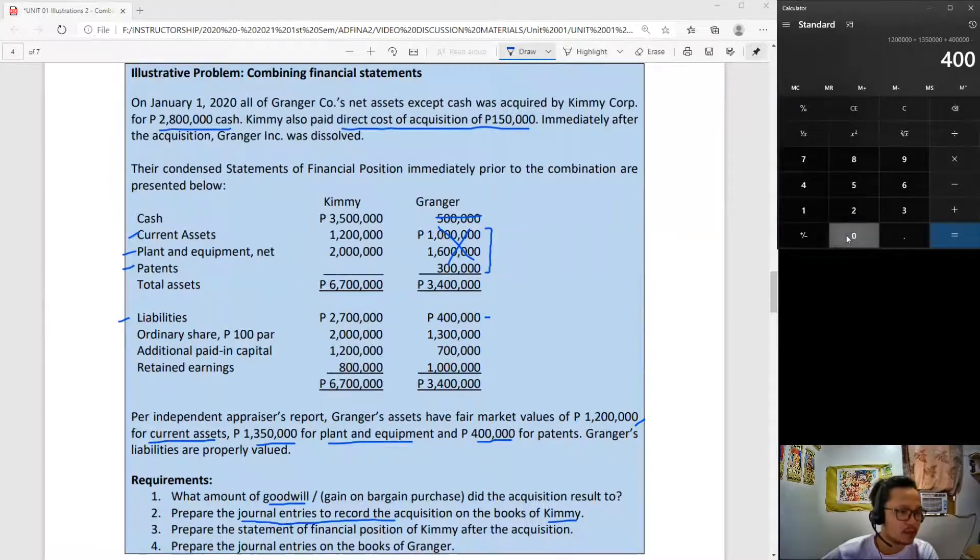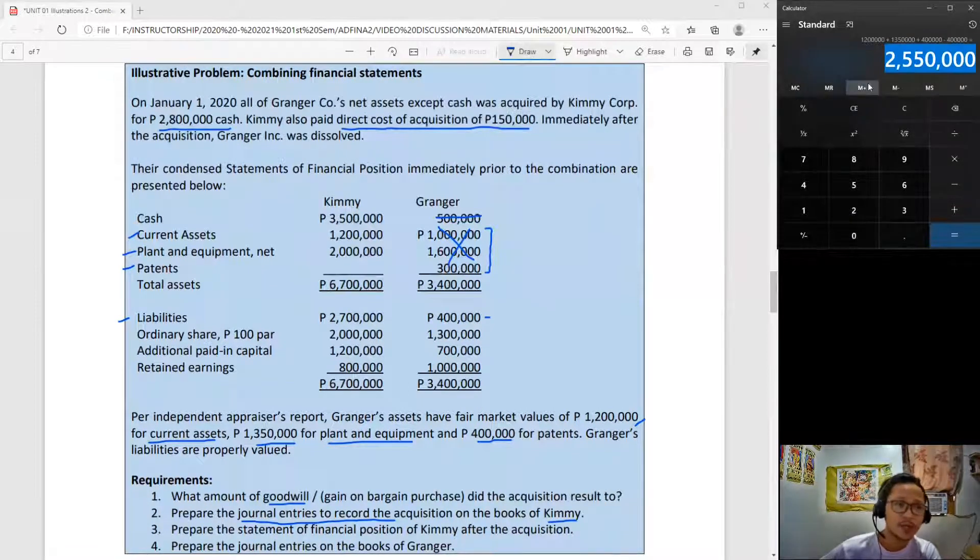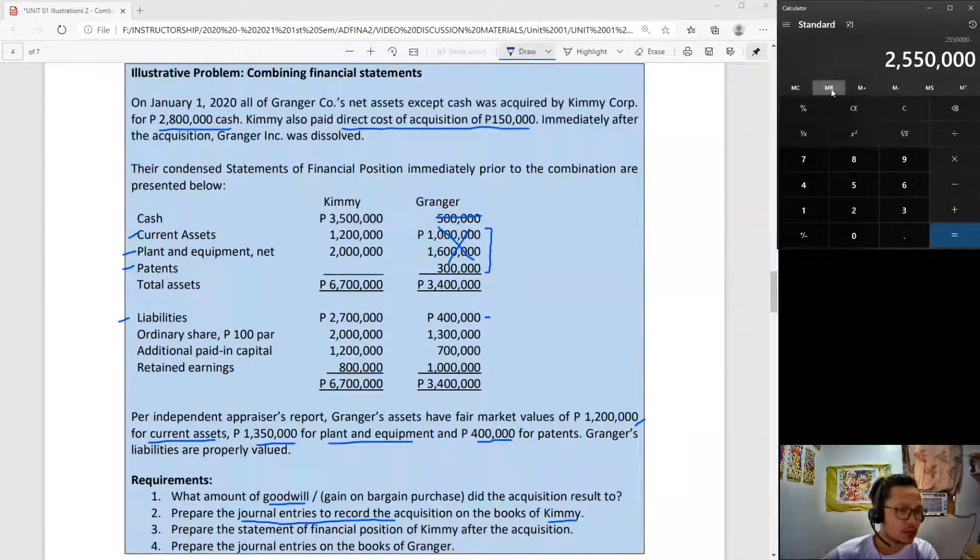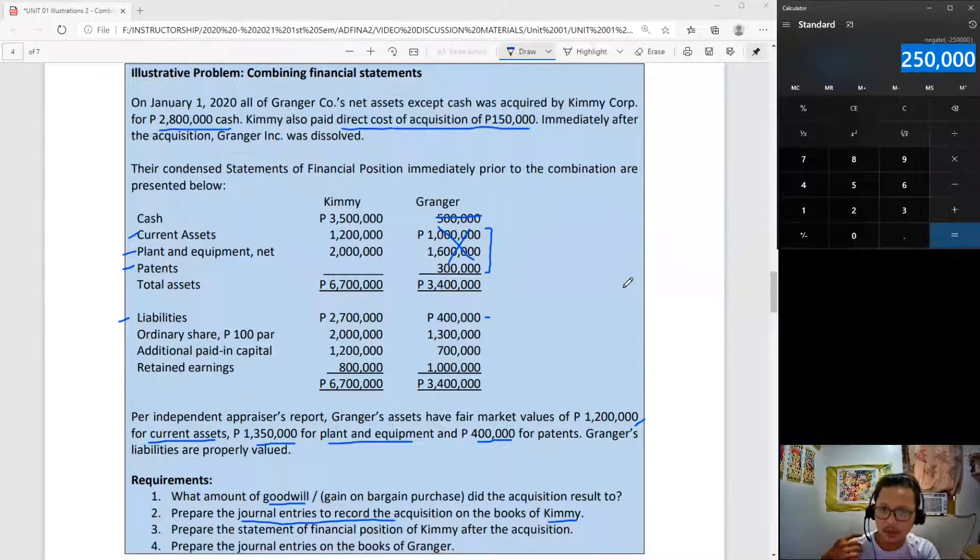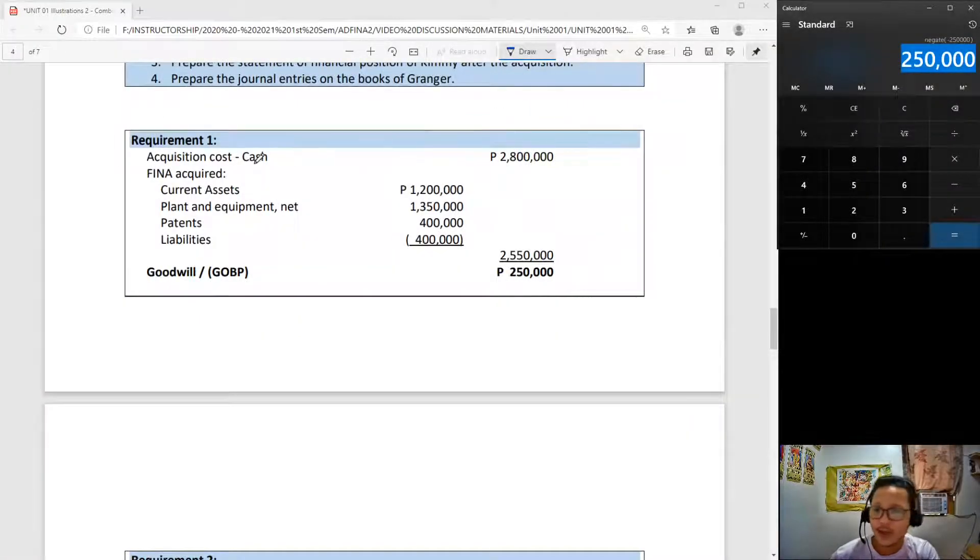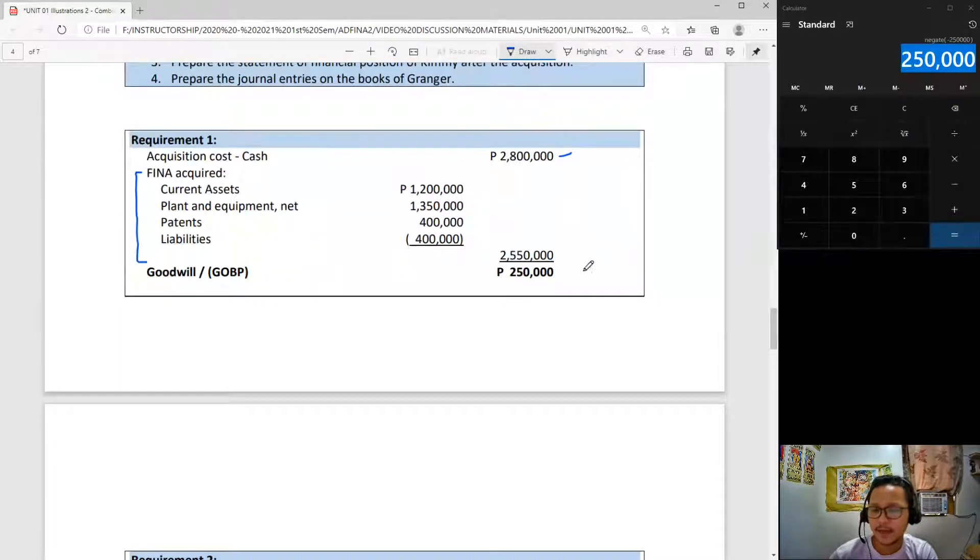Liabilities are properly valued so we use 400,000. Our computation led us to 2,550,000 for FINA. All we have to do is deduct that from your acquisition cost of 2,800,000 for a positive figure of 250,000 goodwill. Your solution should look like this: acquisition cost 2,800,000, computation of FINA, and then goodwill of 250,000.